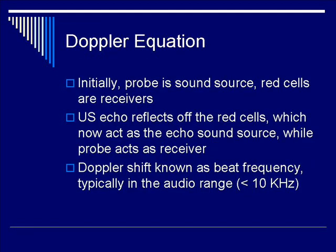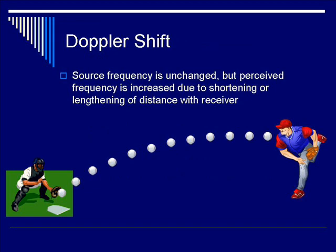In the clinical setting, the probe provides the source of the sound waves and the red blood cells are the receivers. The ultrasound echo reflects off the red cells, which now act as the echo sound source, while the probe becomes the receiver. A Doppler shift is detected from the difference in frequency between the transmitted pulse and the received pulse. It's important to remember that the source frequency is typically unchanged, but the perceived or received frequency is either increased or decreased due to the shortening or lengthening of the distance to the receiver.